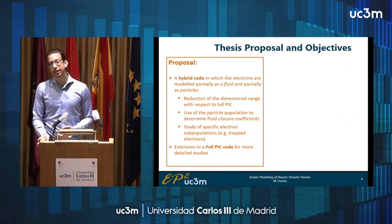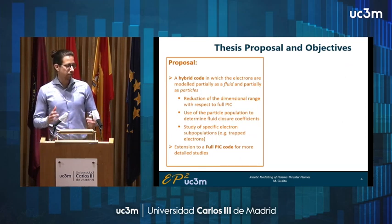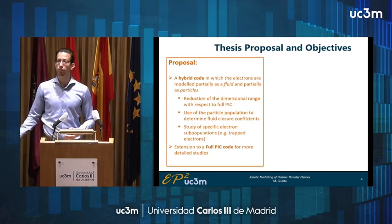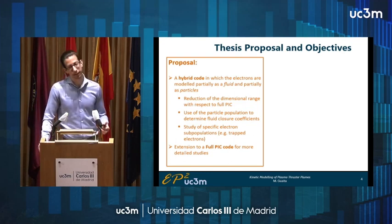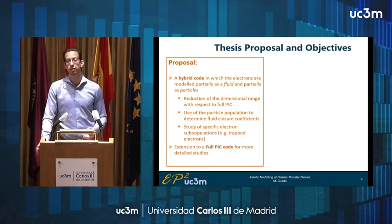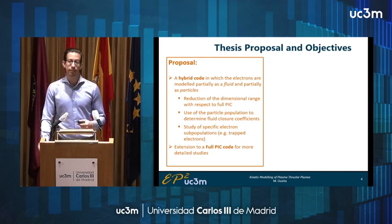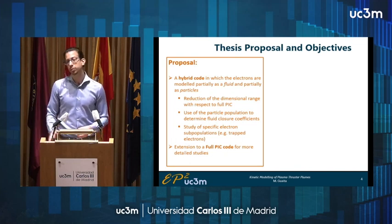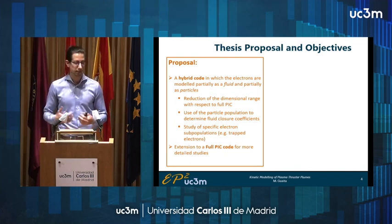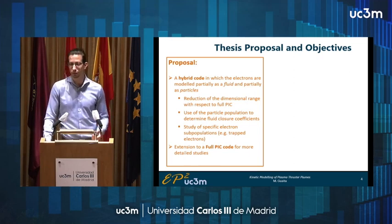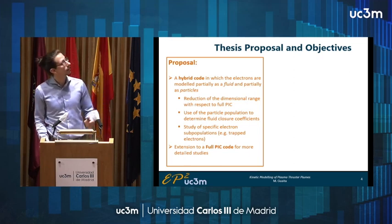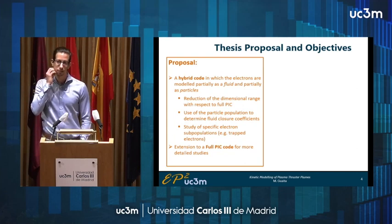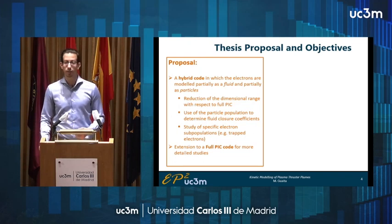So what is the idea behind my thesis? The idea is to take a hybrid code and gradually introduce particle electrons, tending towards a full PIC code. The idea is to first have a stage in which electrons are modeled simultaneously as a fluid and as particles. This means we can take some of the advantages of the fluid model, such as reduced computational times, but use the portion of particle electrons to give us a guess on the closure coefficients for the fluid equations. This may also help us study some specific electron subpopulations — for example, in the case of magnetic nozzles, we can look at trapped electrons.